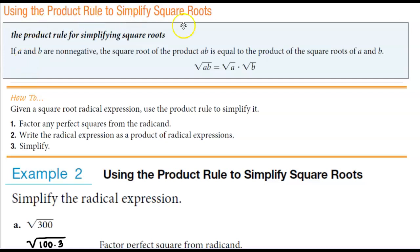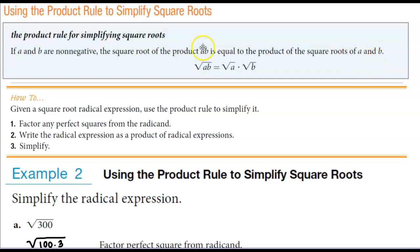Using the product rule to simplify square roots. The product rule for simplifying square roots states that if a and b are non-negative, the square root of the product a times b is equal to the product of the square roots of a and b. So here we have the square root of a times b, which is the same as the square root of a times the square root of b.